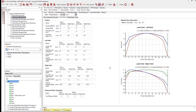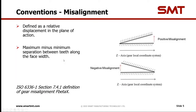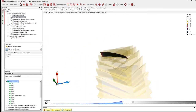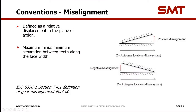Before we go further into specifying properties, we need to talk about conventions within micro geometry mode, as this does cause some confusion. The first topic is misalignment. Within Master, misalignment is defined as a relative displacement in the plane of action — essentially the maximum minus the minimum separation between teeth along the face width. Looking in terms of the local Z coordinate system of the gear: if it's separating at a higher Z value, that's a positive misalignment; at the lower end, it's a negative misalignment.